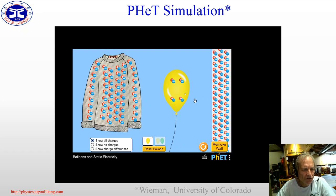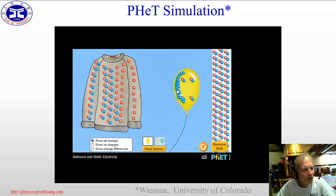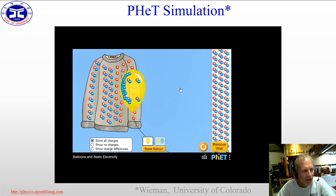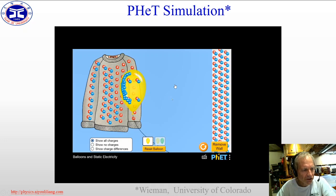Here's the PHET simulation. For example, here we have the sweater showing its charges — charge balance. We start the simulation and rub on the sweater. Students observe that more negative charges go onto the balloon from the sweater. When I pull the balloon away, it immediately goes back toward the sweater. Those are the three main components — webpage, worksheet, and simulation — and these PHET simulations are available free on the University of Colorado website.